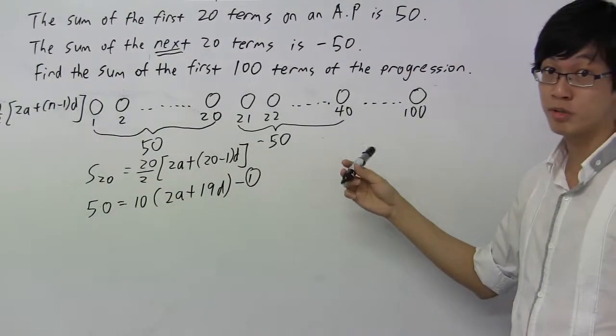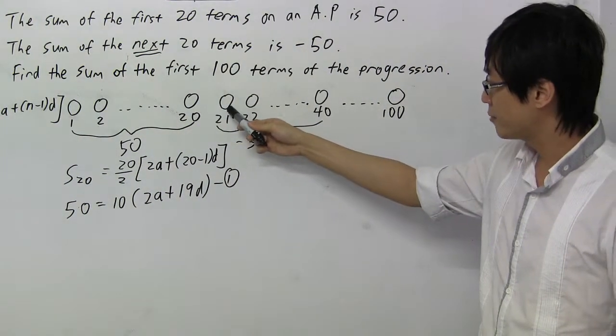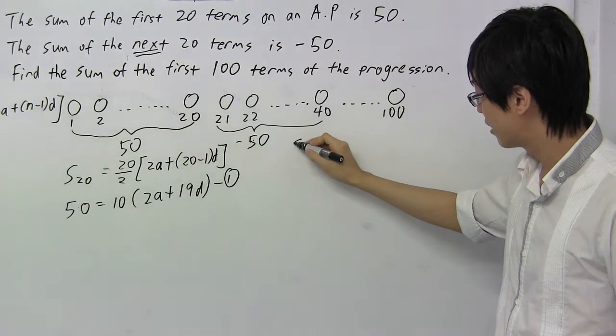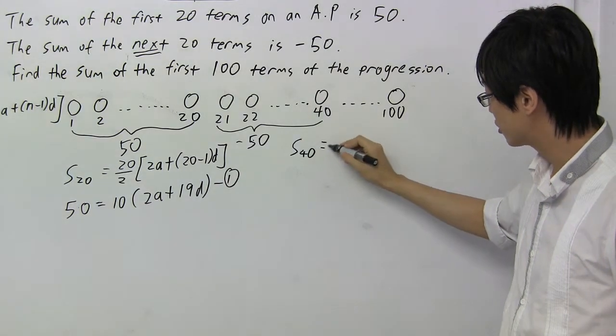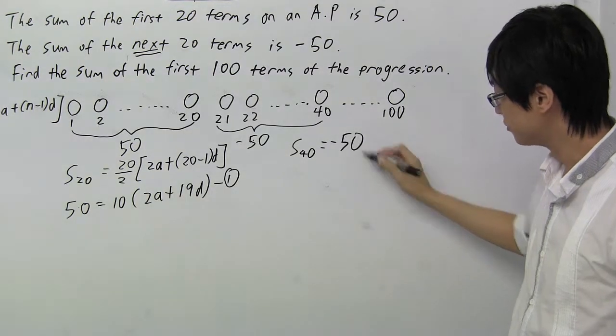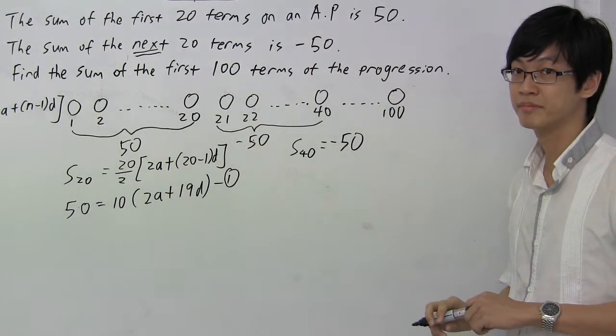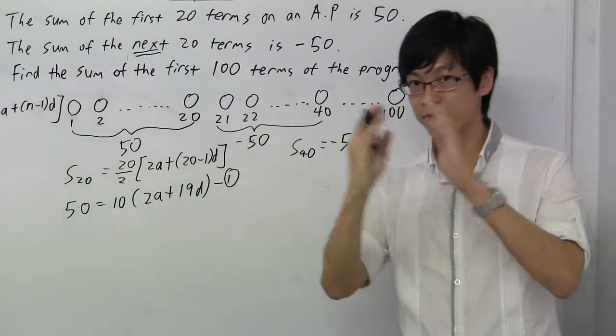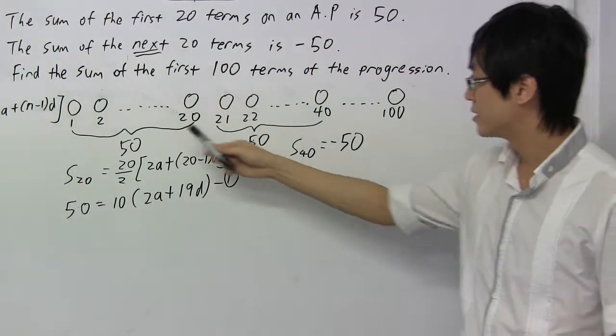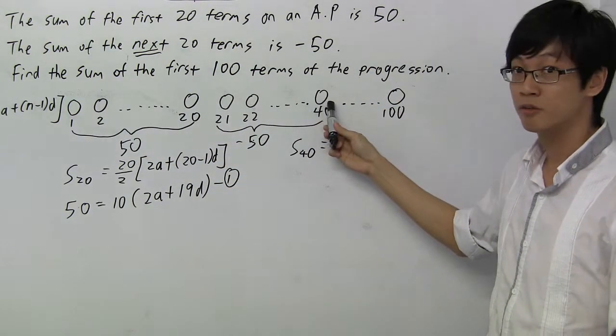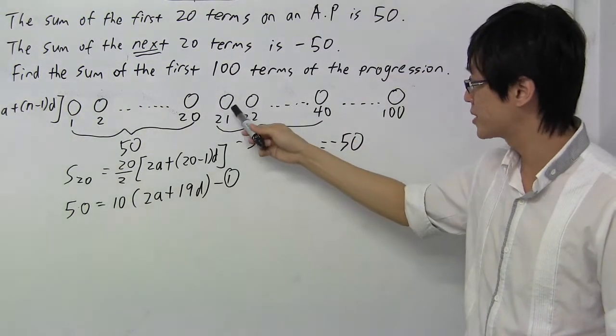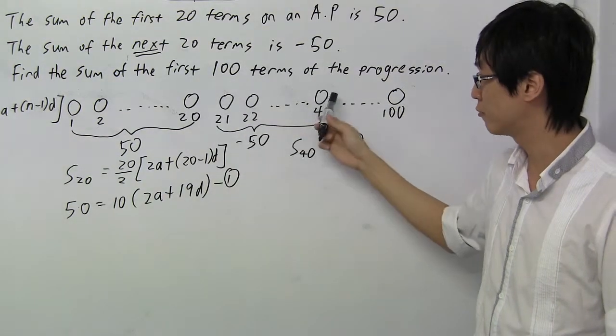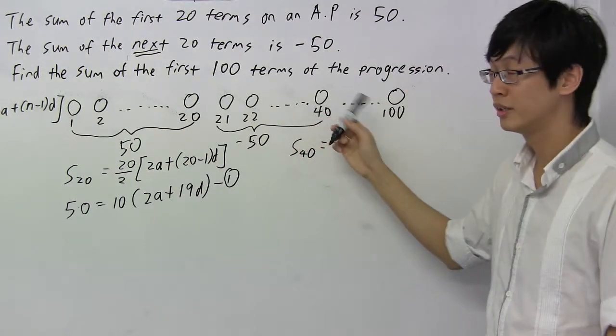And now I'm going to share with you a very common mistake that a lot of students make. The sum from here to here is minus 50, right? A lot of students actually write this: S40 equals to minus 50. And what is wrong with this statement? The fault is, S40 stands for the sum of the first 40 terms. That means summing from here to here, which is incorrect because the question says that I'm summing from here to here, the 21st to the 40th and not from here to here. So this is wrong.